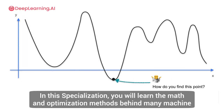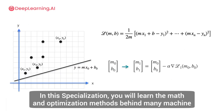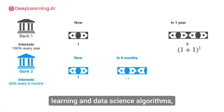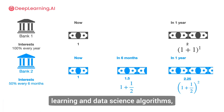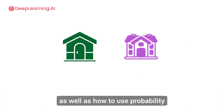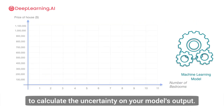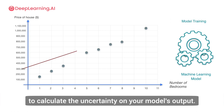In this specialization, you will learn the math and optimization methods behind many machine learning and data science algorithms, as well as how to use probability to calculate the uncertainty on your model's output.